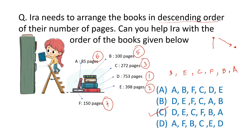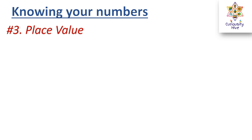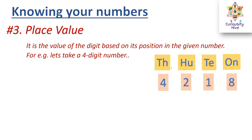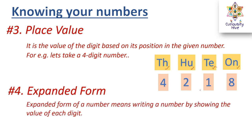Now we look at the concepts of place value and expanded form. Place value is the value of a digit based on its position in the given number. For example, in the four-digit number 4218: the place value for 8 is ones, for 1 is tens, for 2 is hundreds, and for 4 is thousands — making it four thousand two hundred and eighteen.